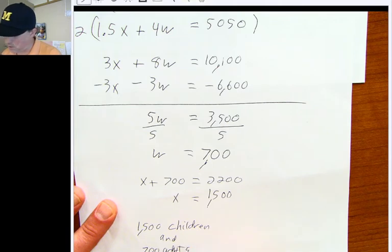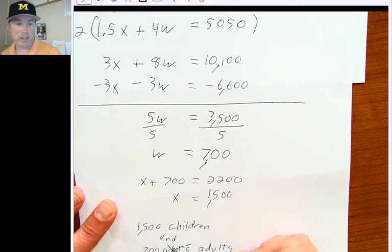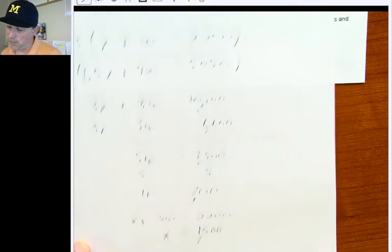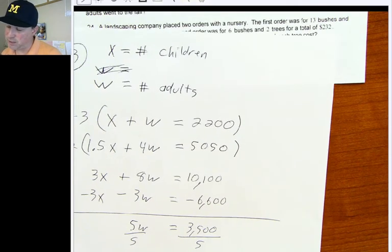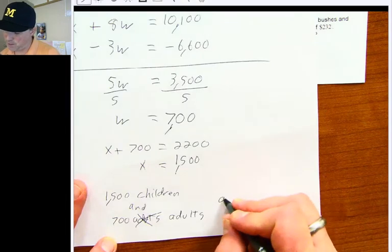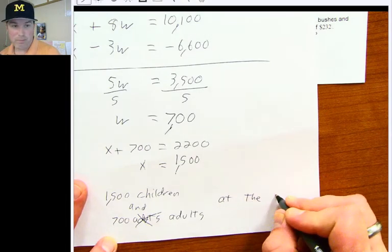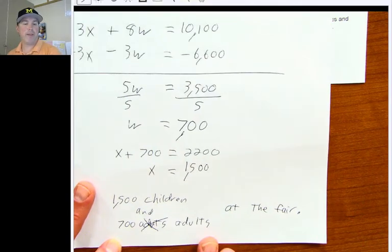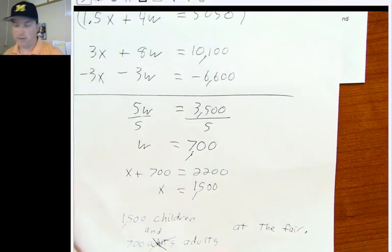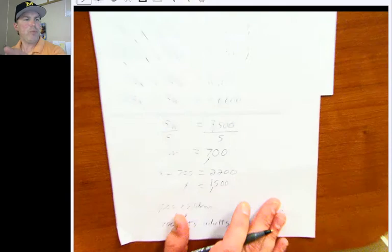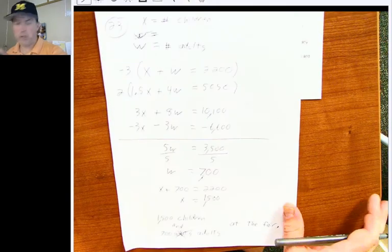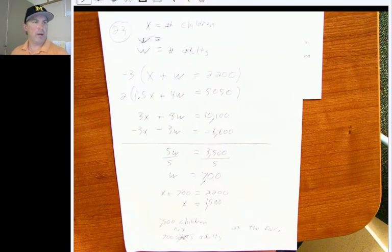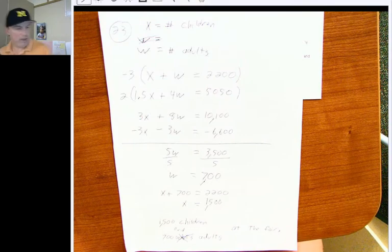And then finally, if I go x plus 700, I know I must get an answer of 2,200. When you subtract that 700 from both sides, you'll end up with an answer of 1,500. Don't forget to make sure you answer the question at the end. There were 1,500 children and 700 adults at the fair. And that, everybody, that is number 23 in all its wonderful beauty.